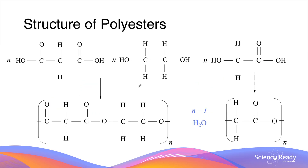To summarize, polyesters can be produced using two different kinds of monomers. The reaction between a dicarboxylic acid and a di-alcohol produces a polyester where each unit contains both functional groups. In contrast, a polyester can also be produced using a single monomer that contains both the carboxylic acid and the alcohol functional group needed to make the ester bond.